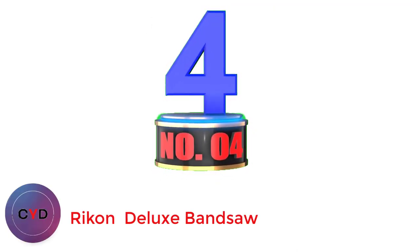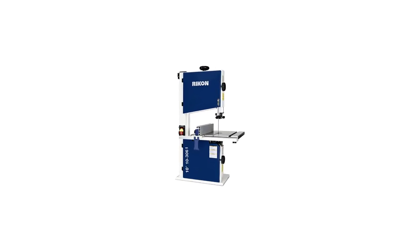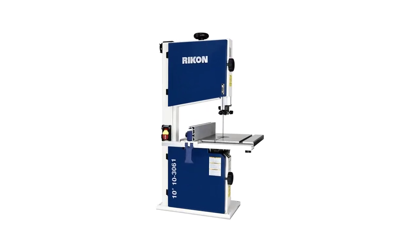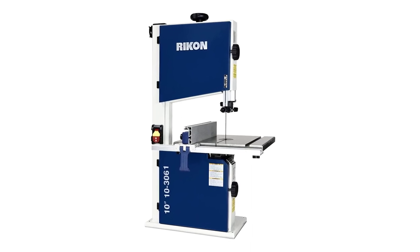Number 4: Rikon Deluxe Bandsaw. A smaller size than my last pick, the Rikon 10-306 10-inch Deluxe Bandsaw is capable of cutting into wood and most metal, with its half-HP motor, which runs at 5.5 amps, 110V 60Hz, with a speed of 1720 RPM.